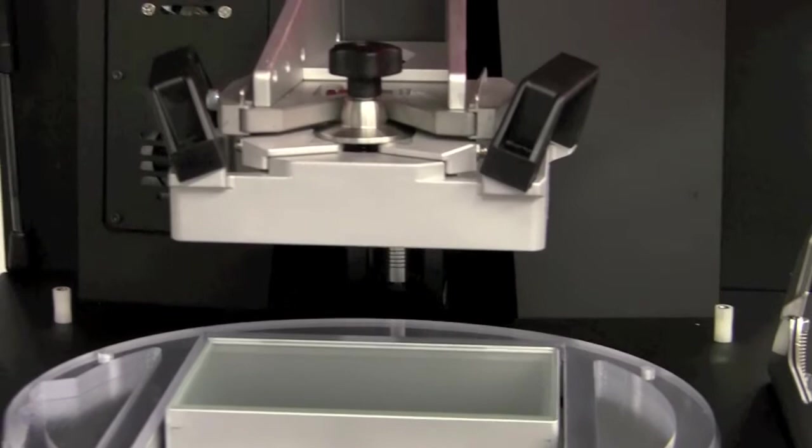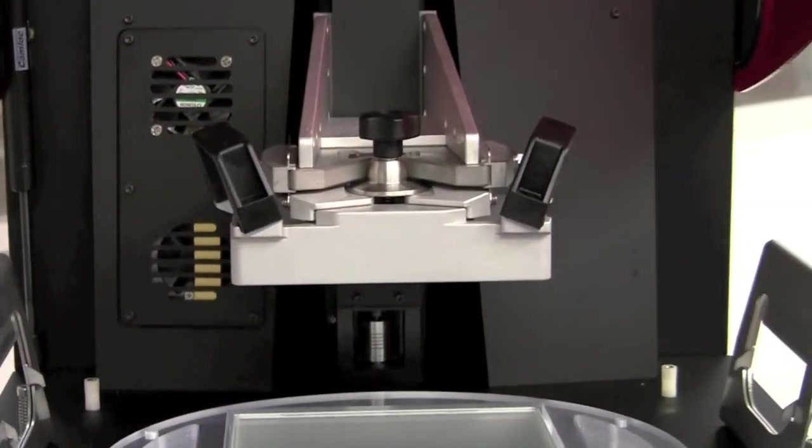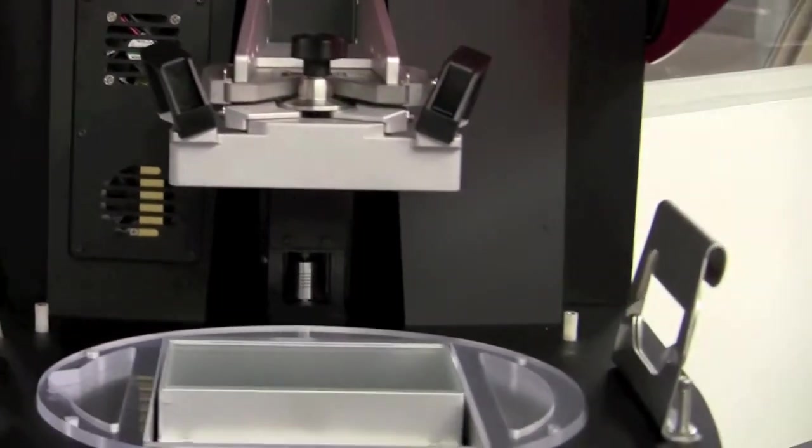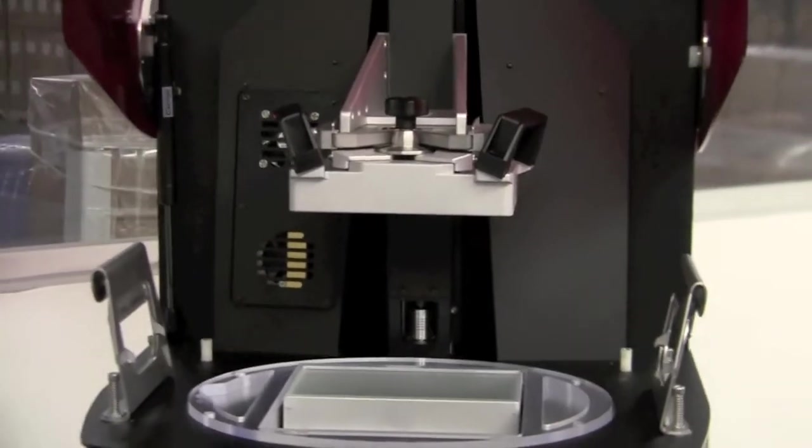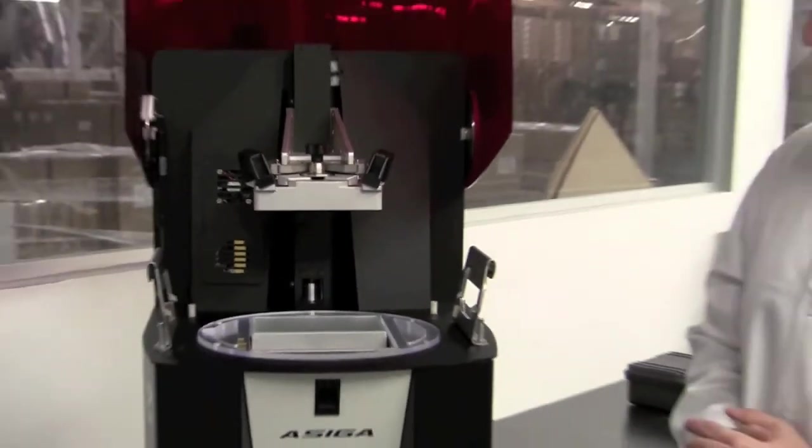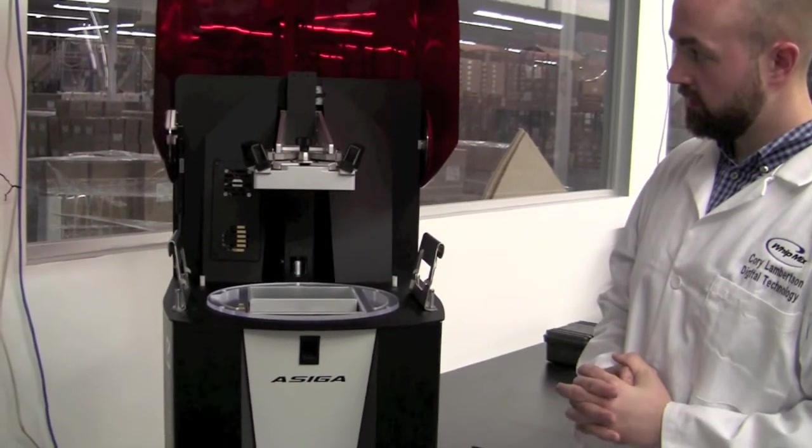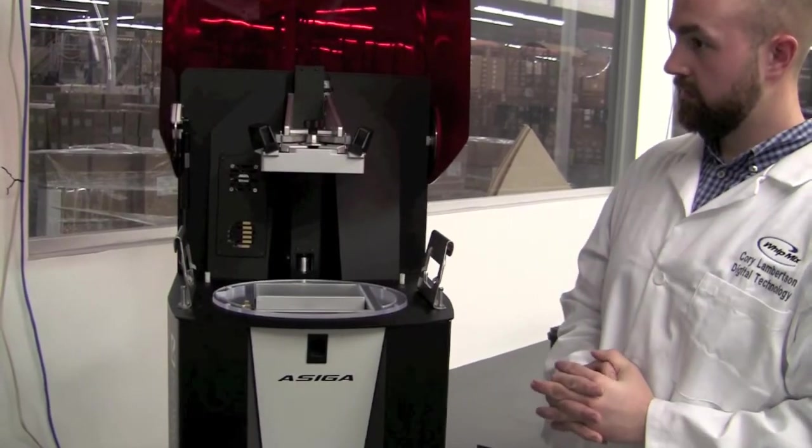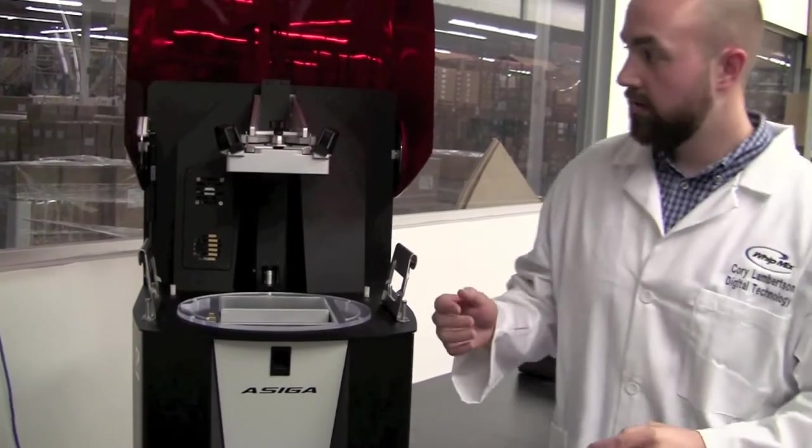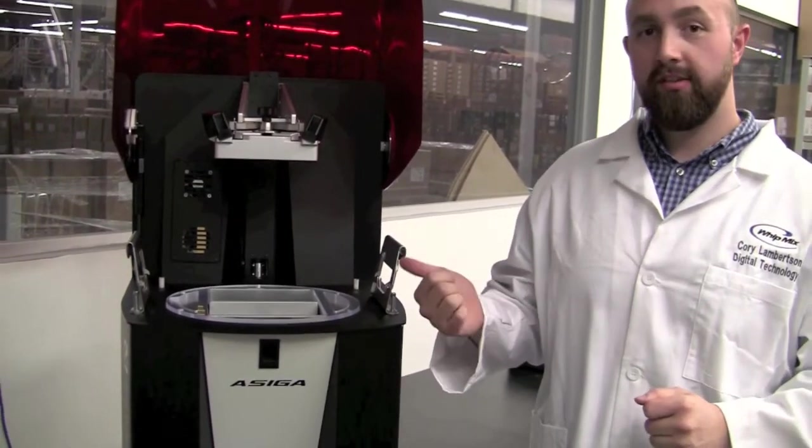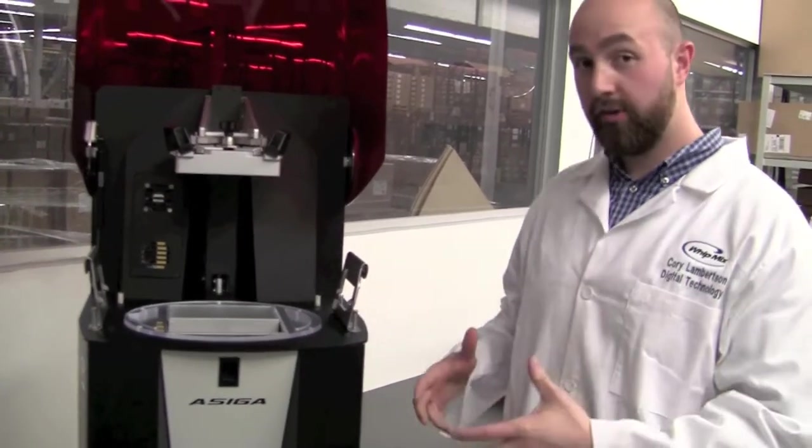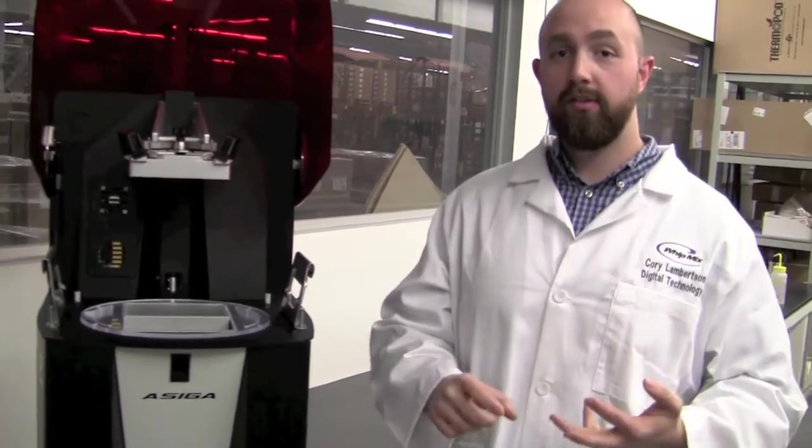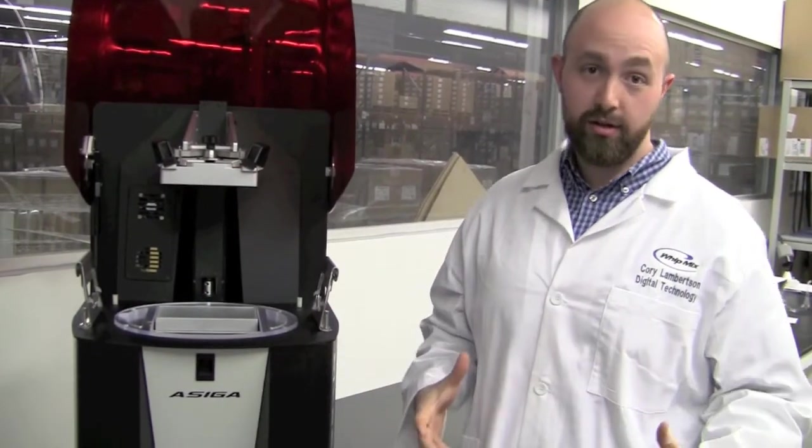So now the build head will move into its home position. Once it is in its home position, you are now ready to start printing your surgical guides, your dental models, your custom impression trays, your castables, and anything that you can think of in between.